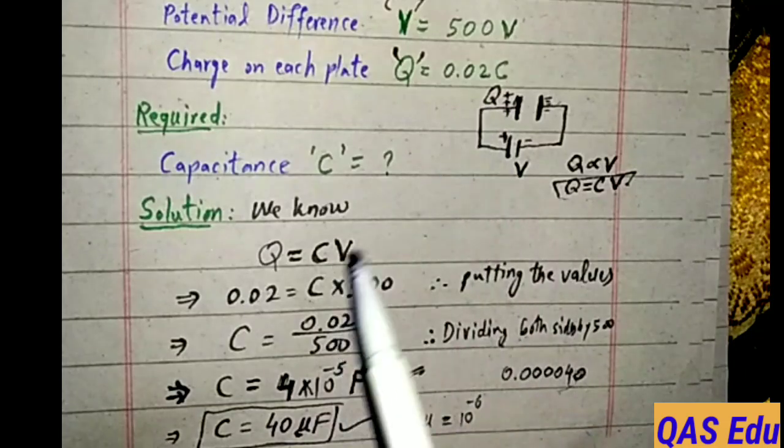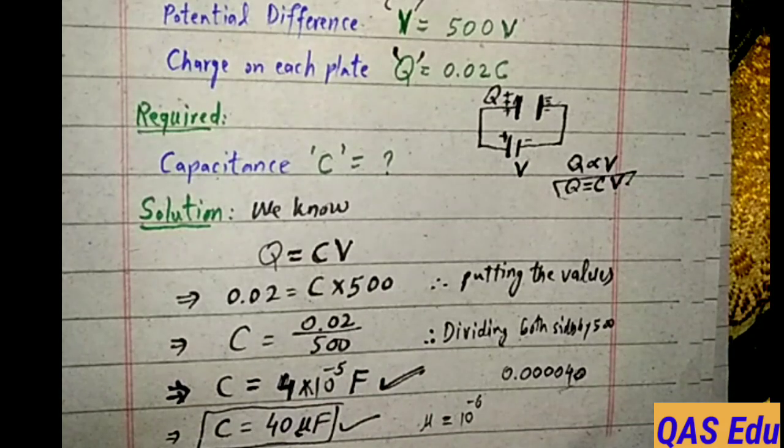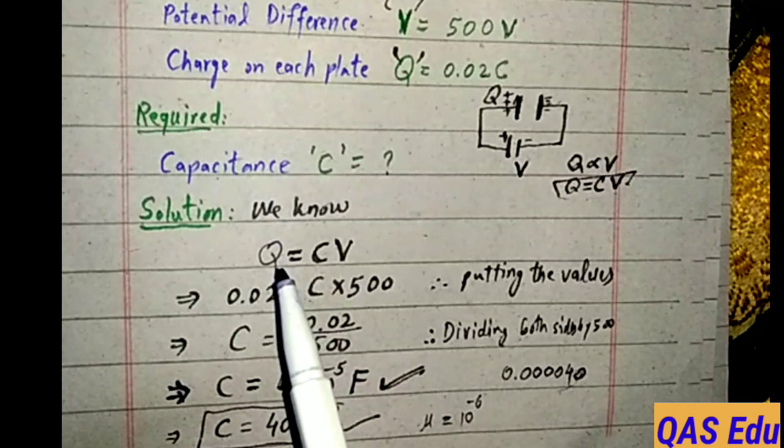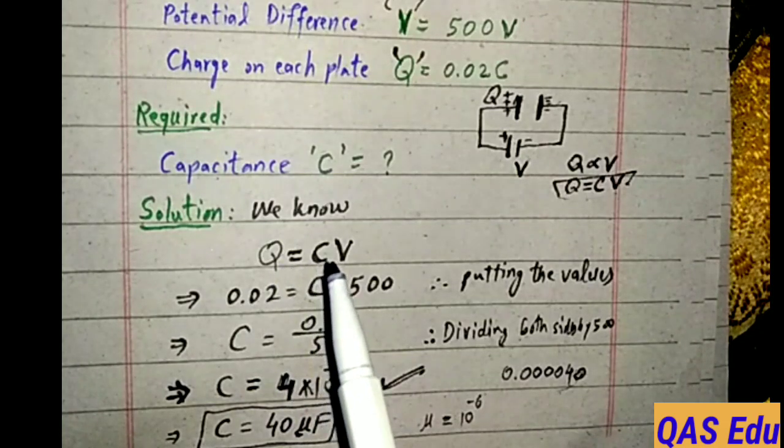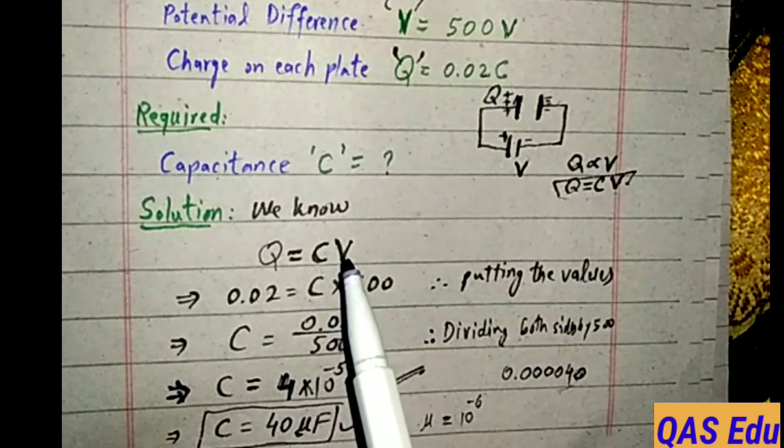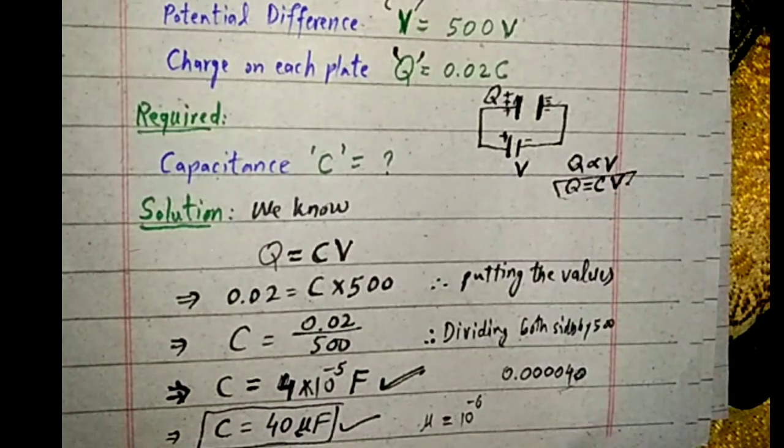Where voltage is 500 volt and charge is 0.02 coulomb. These values are given. The main formula is charge coulomb unit, C capacitance farad unit, voltage unit is volt. This is the solution. Thank you.